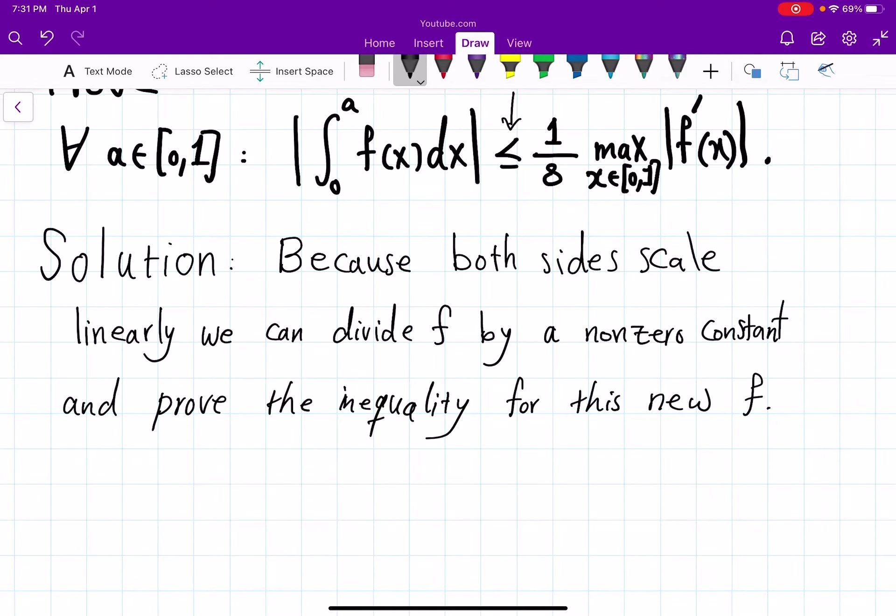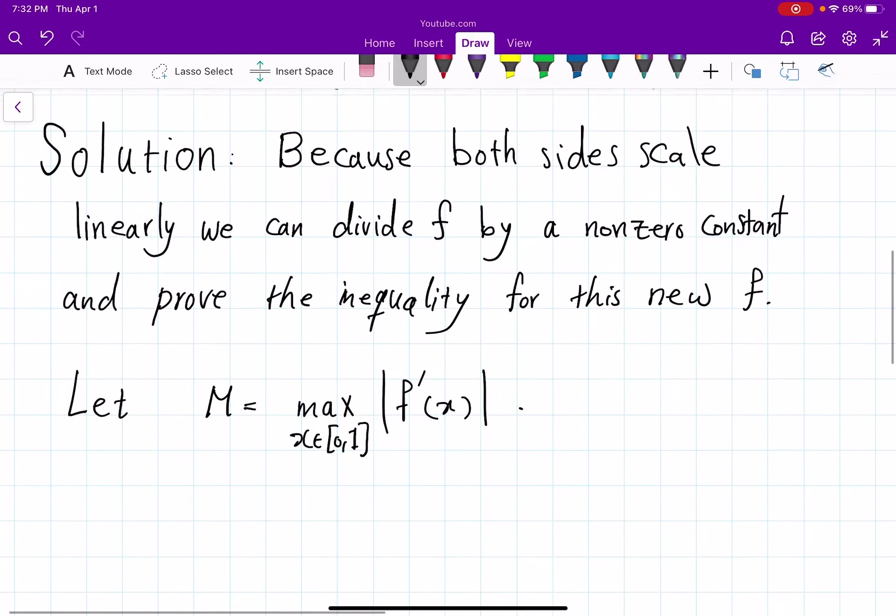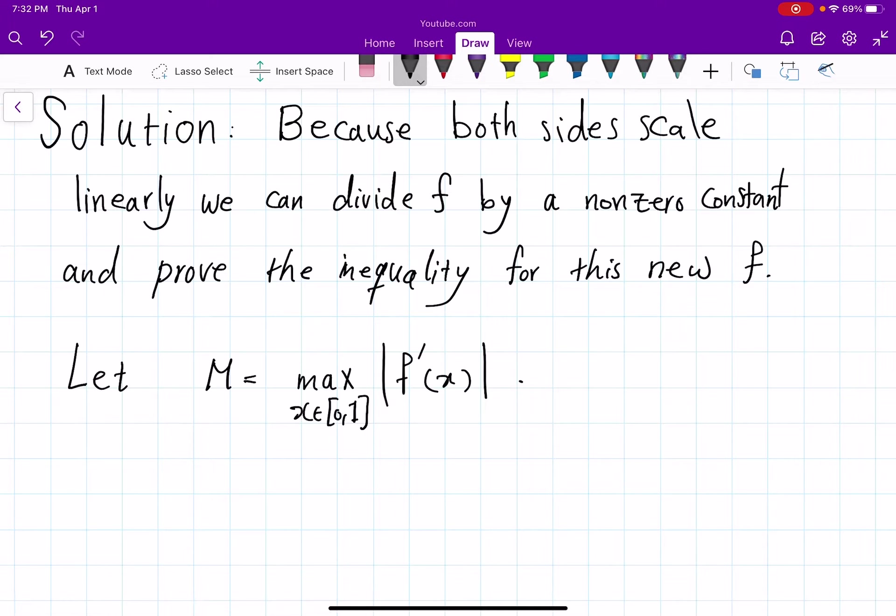I want to go ahead and pick it to be So let M be the maximum |f'(x)| for x belonging to [0,1]. So the maximum absolute value of the derivative.